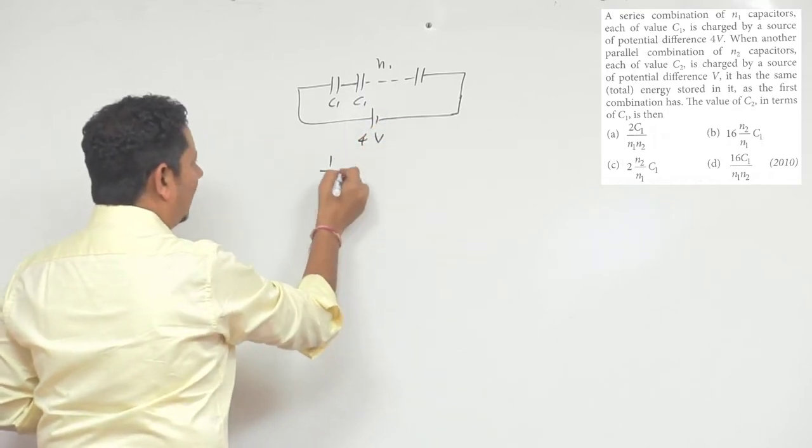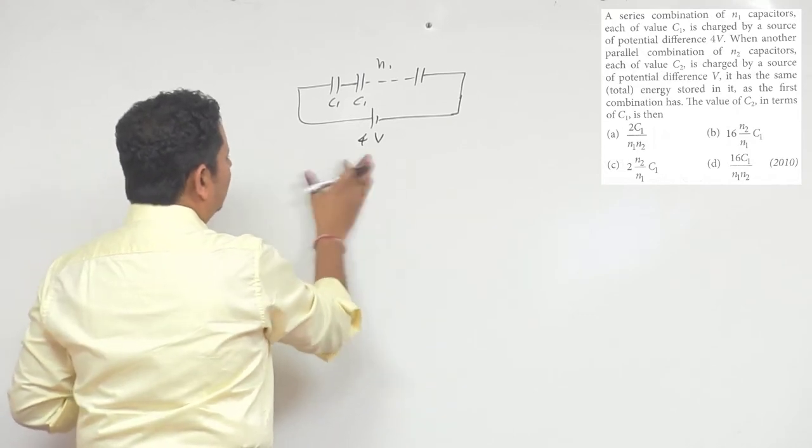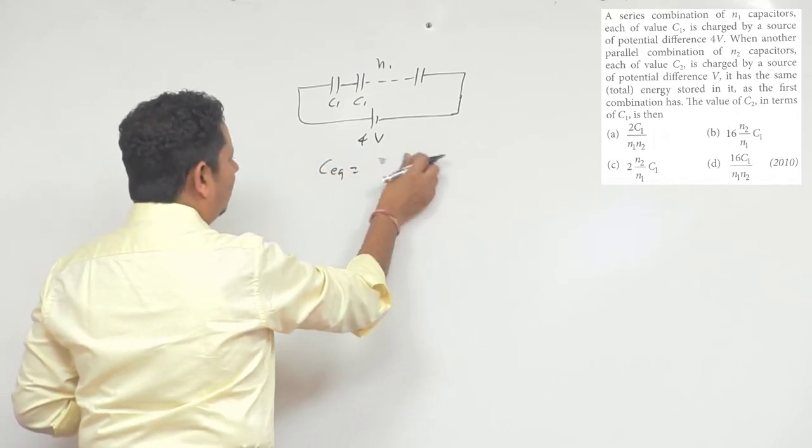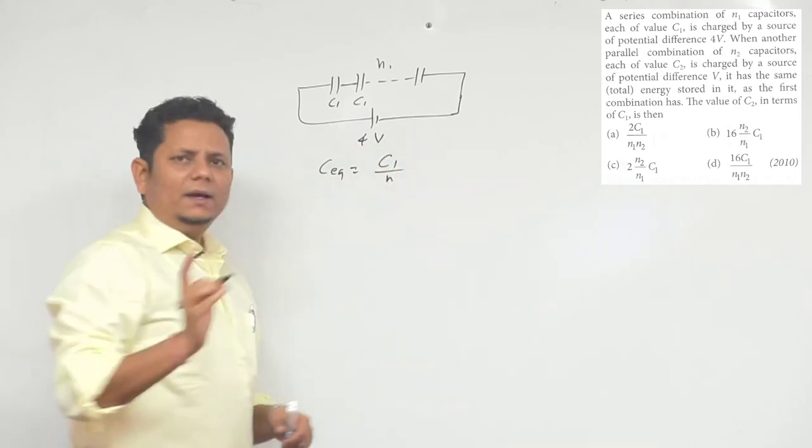Now for the equivalent capacitance: 1/C_eq will be equal to... So the equivalent is C1 divided by N1 for this series case.